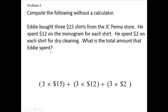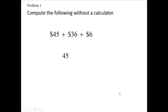Now, what's the total amount? You have to add these up. So you have $45, $36 for the monograms, and $6 for the dry cleaning. If we add these up, write them down in columns. 5 plus 6 is 11, and 6 is 17, carry the 1. 1 and 4 is 5, and 3 is 8. So he spent $87.